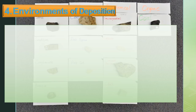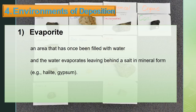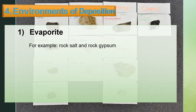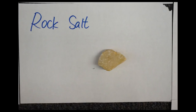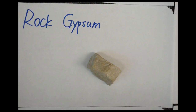Environment of deposition. First, evaporite — an area that was once filled with water, and the water evaporated leaving behind salts in mineral form such as halite and gypsum. For example, rock salt and rock gypsum. Here are samples of rock salt and rock gypsum.